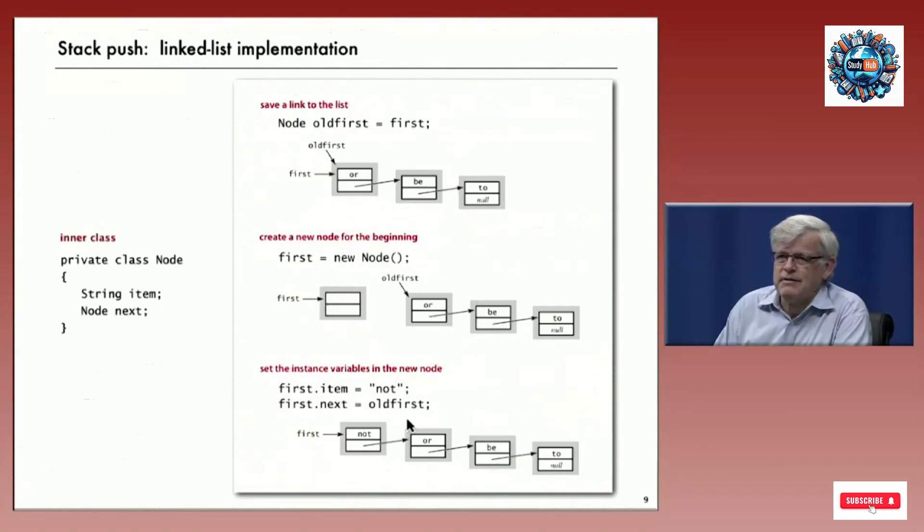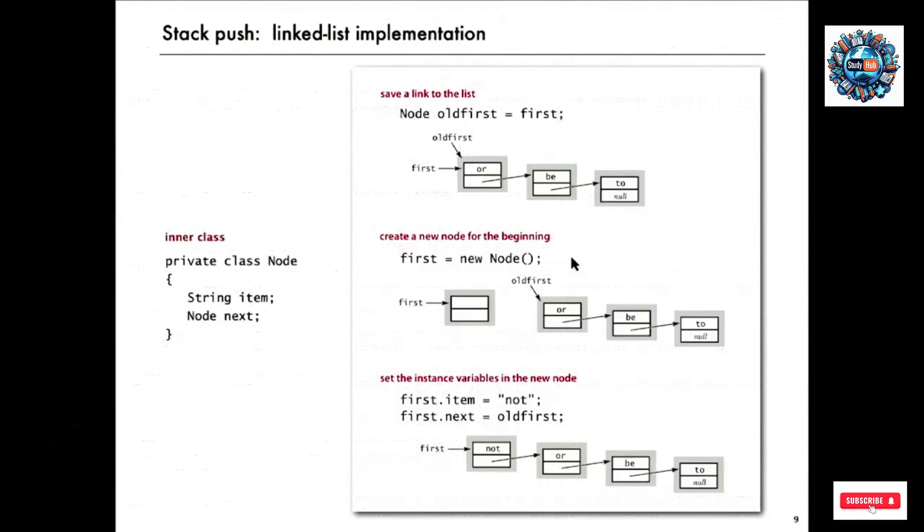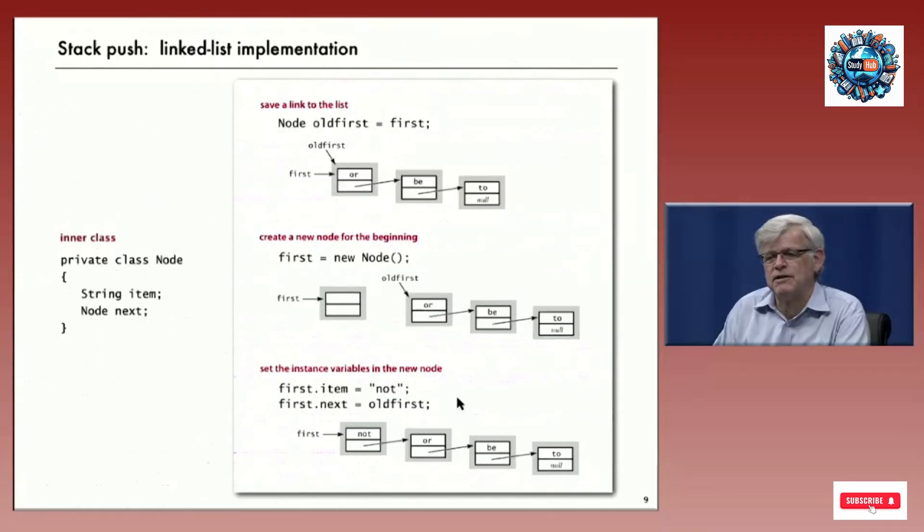What about the push operation? For the push operation, we want to add a new node at the beginning of the linked list. First thing we do is save away the pointer to the beginning of the list. That's oldfirst equals first. Then we create a new node that's going to be the new node that we put at the beginning of the list. That's first equals new Node. Then we set its instance variables. Its item is the string that we want to put at the beginning of the list, in this case 'not'. And its next is the old first item of the list, which is now the second item of the list. After this operation, we have first pointing to the beginning of the list and we have the items on the list in decreasing order of when they were put onto the stack.